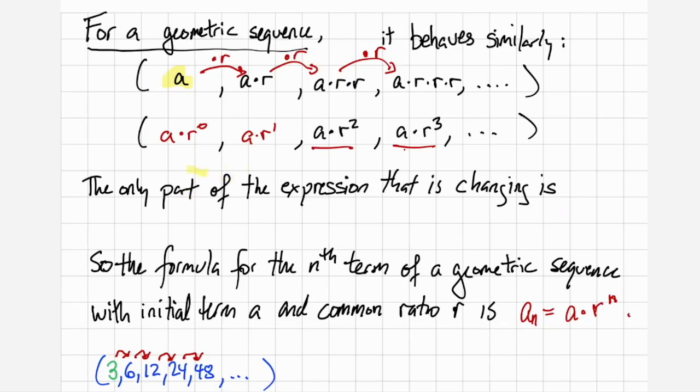And this time we see that the only part of the expression that's changing is the exponent. So we should expect that the formula for the nth term of a geometric sequence with initial term a and common ratio r is a times r to the n.